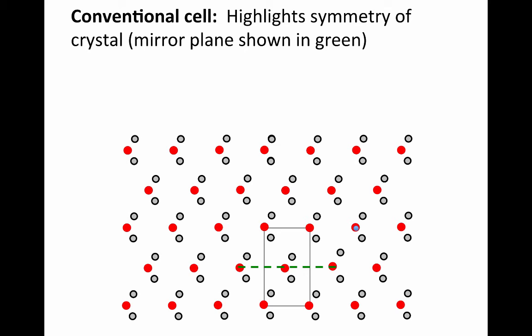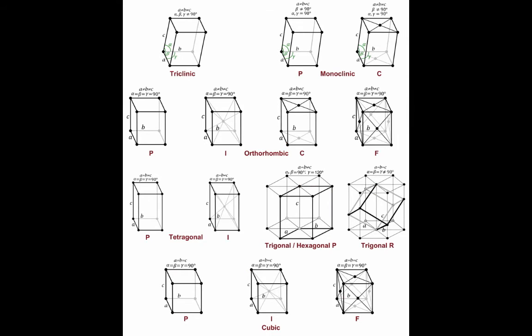So as a product of that, by convention, we use the centered rectangular cell rather than the primitive diamond cell to talk about this lattice, even though structurally they're equivalent. That's why you see all these different centered cells out there, is that it highlights the symmetry of the crystal.